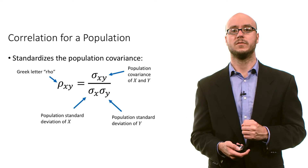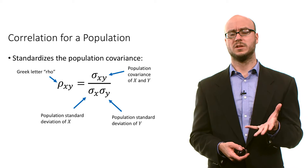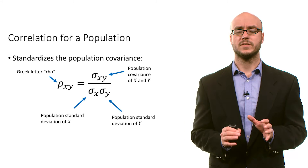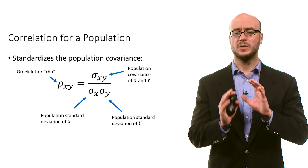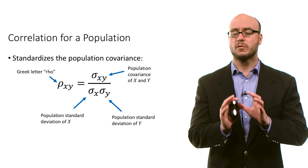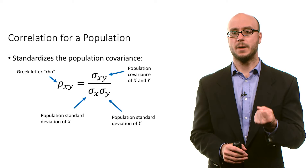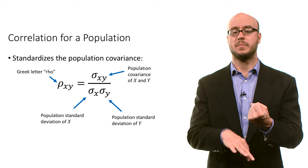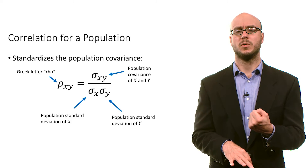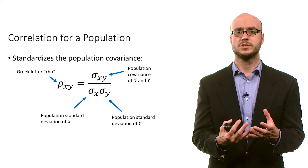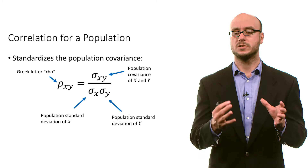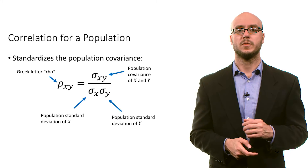This is an important property of correlation. For the population formula, it's the same — the only difference is that we use Greek letters to keep track of whether we're calculating from a population or not. You take a population covariance and divide by the population standard deviation of x times the population standard deviation of y. The result is a correlation of a population that we call rho.